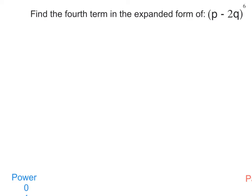What if they asked you to find the fourth term in the expanded form of P minus 2Q to the sixth power? It's true, we do have a binomial to the power of six right here, and we should think of Pascal's triangle.